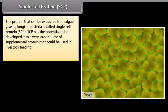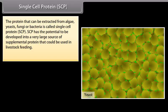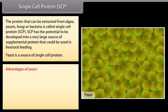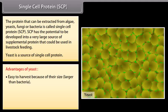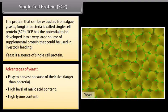Single Cell Protein (SCP): The protein that can be extracted from algae, yeasts, fungi, or bacteria is called single cell protein. SCP has the potential to be developed into a large source of supplemental protein for livestock feeding. Yeast is a source of SCP. Advantages of yeast include: easy to harvest due to larger size than bacteria, high level of malic acid content, high lysine content, and ability to grow at acidic pH.